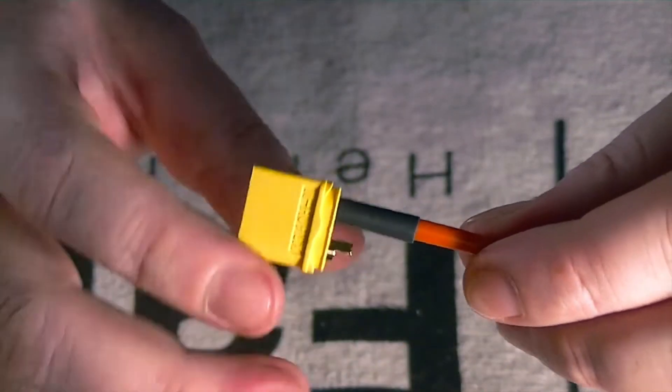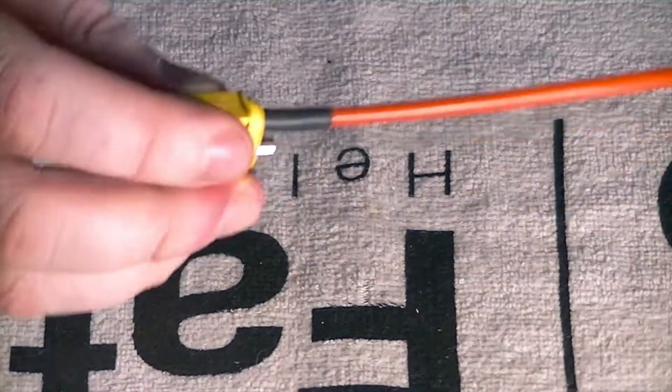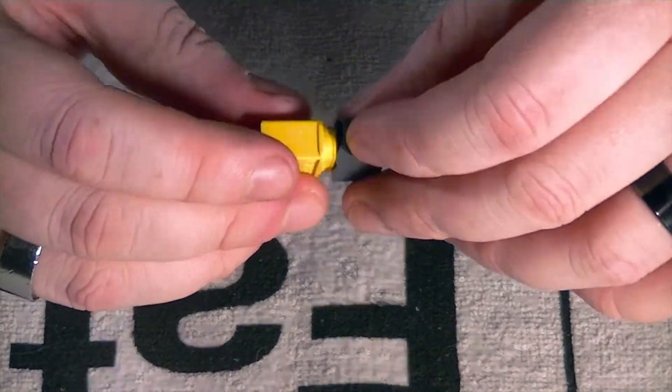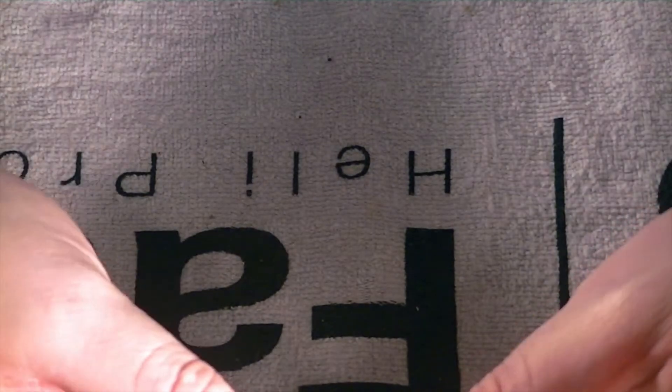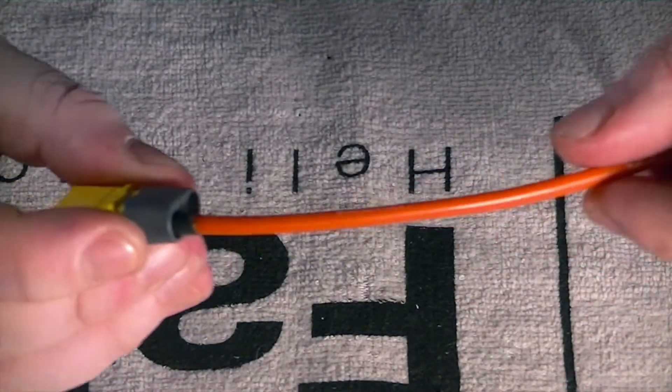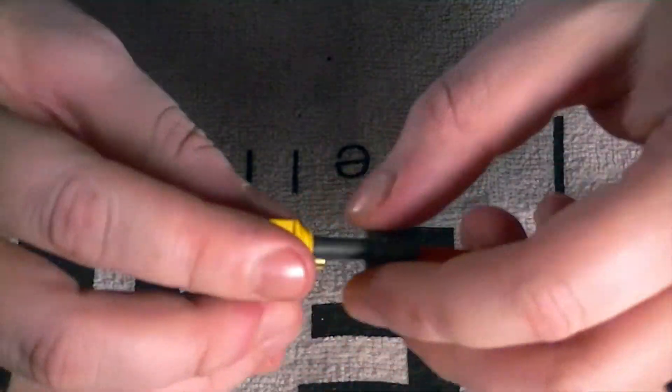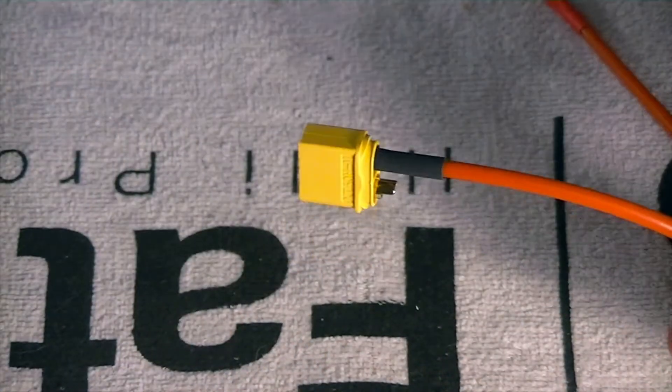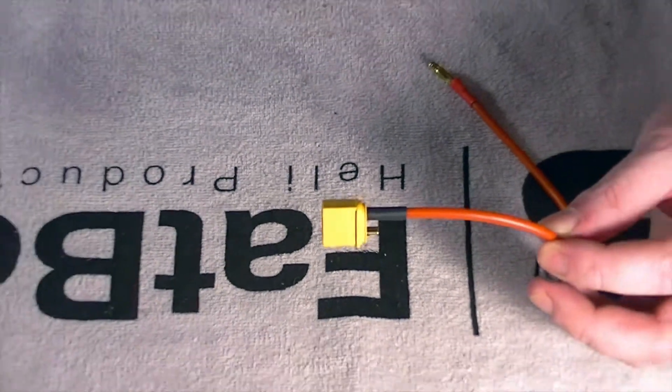I'll get a lighter and I'll heat shrink that down or a heating gun, whatever you guys like to use. And then, boom, once that's done, we come in with our cap. I'm not going to snap the cap on right now because I've got to do the other side. But you guys can see that. So I'll do the other side real quick, and then I'll come back and just show you guys what the final connection looks like.